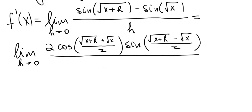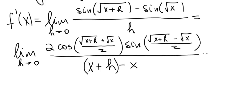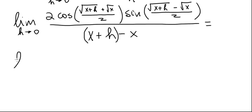If we try plugging in zero for h here, we get zero over zero, which is an indeterminate form. The next step is to rewrite h in the denominator as (x+h) minus x — adding and subtracting x. Now take (x+h) in parentheses, and factor x+h minus x.